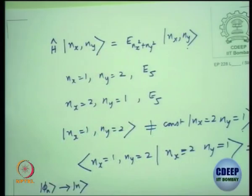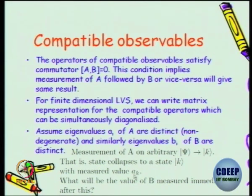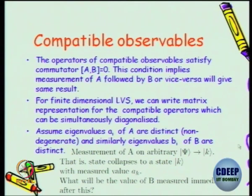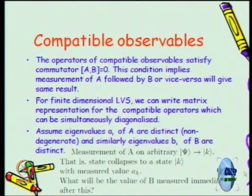Remember that phi_n has eigenvalue lambda_n and I am keeping track of n, not phi — this is just a dummy variable. So: measurement of observable A on an arbitrary state psi. You are given a system prepared in state psi and you do a measurement of observable A. We have already argued it will collapse to one of the eigenstates of A, but which eigenstate nobody knows before measurement. After measurement, the person says they got eigenvalue a_k — so the state has collapsed to |k⟩.